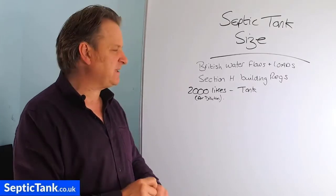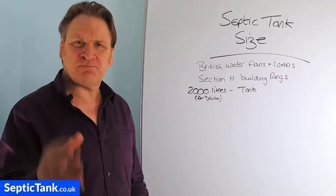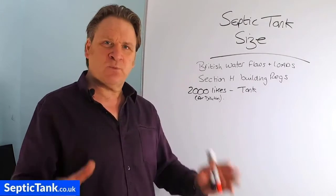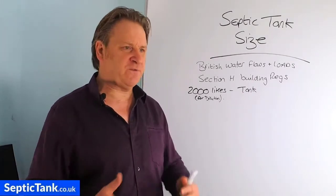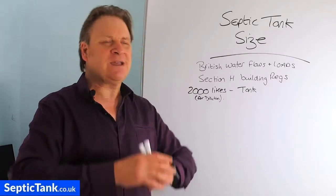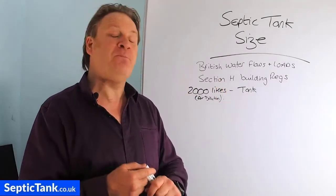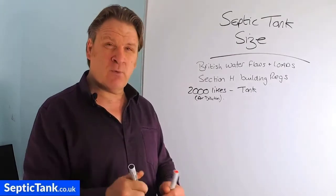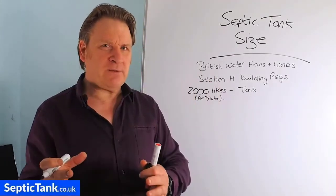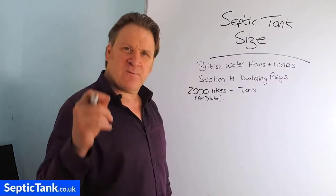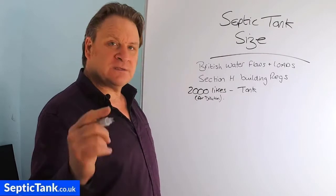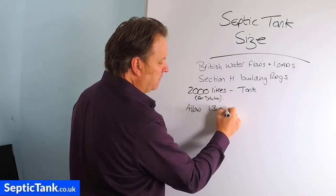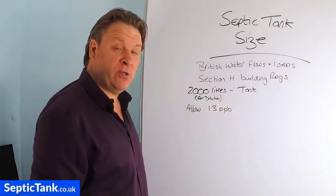So how do you work out the size of your septic tank for the house you're buying? It's based on the number of bedrooms — forget the number of people. You see on the internet lots of adverts for four-person or six-person septic tanks. That's okay, but it goes on the number of bedrooms primarily. The government calculator tells you that you have to allow 1.3 people per bedroom.